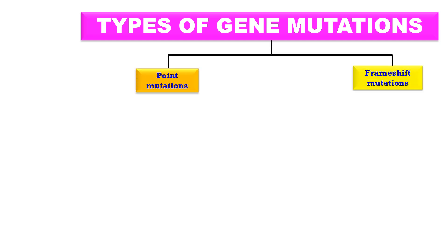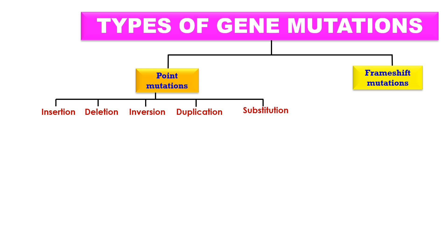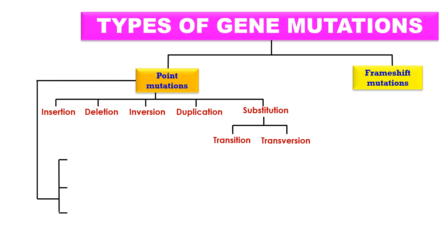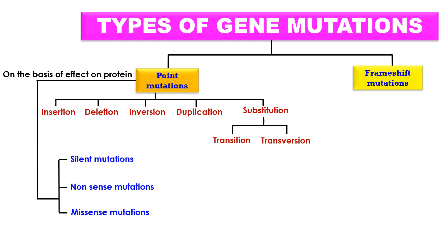The types of gene mutations — gene mutation is basically of two types: first, point mutations, then second, frameshift mutations. Point mutations are further of five types: insertion, deletion, inversion, duplication, and substitution, while substitution is again of two subtypes — transition and transversion. On the basis of effect on protein, point mutations can be further classified as silent mutations, nonsense mutations, and missense mutations, while frameshift mutations are of two types: insertion frameshift mutations or deletion frameshift mutations.